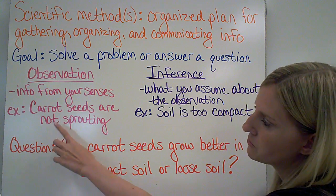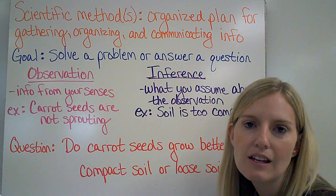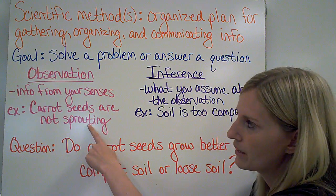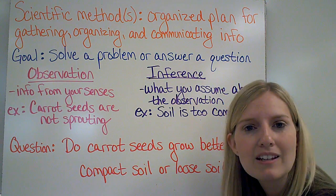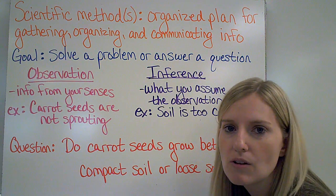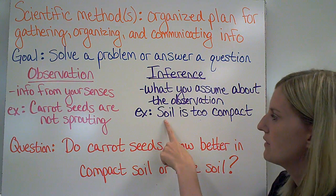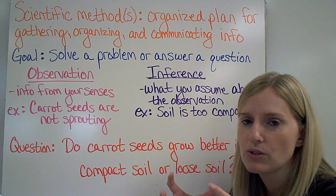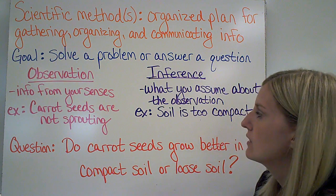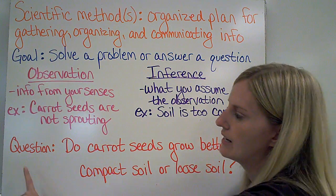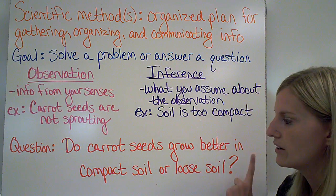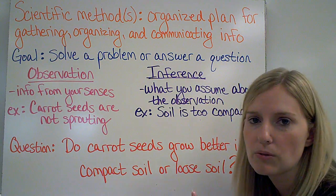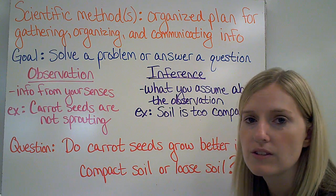Our example of an experiment is going to deal with carrot seeds. Let's say that I plant some carrot seeds, and after about a week I see that there has been no growth at all — they're not sprouting. I would then want to make an inference about that so that I can grow carrot seeds properly. My inference might be that the soil around the seeds is too compact and it's not letting the roots grow as they should. So I take that inference and change it into a question: Do carrot seeds grow better in compact soil or in loose soil?